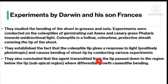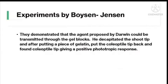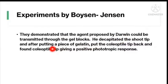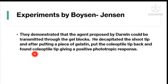They concluded that an agent transmitted from the tip passed down to the sub-apical region, where differential growth caused the bending. Next, experiments by Boysen-Jensen: they demonstrated that this agent proposed by Darwin could be transmitted through gel blocks. He decapitated the shoot tip and, after putting a piece of gelatin, placed the coleoptyle tip back and found it giving a positive phototropic response.